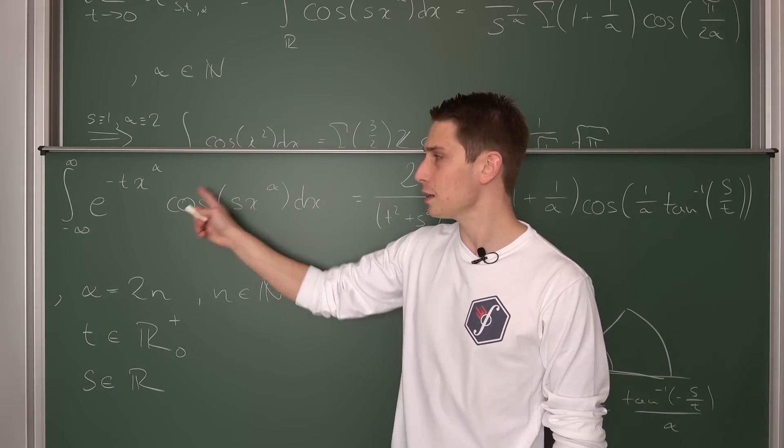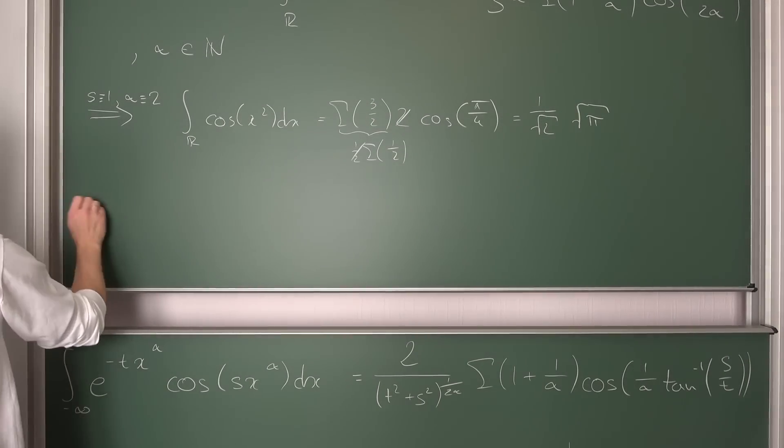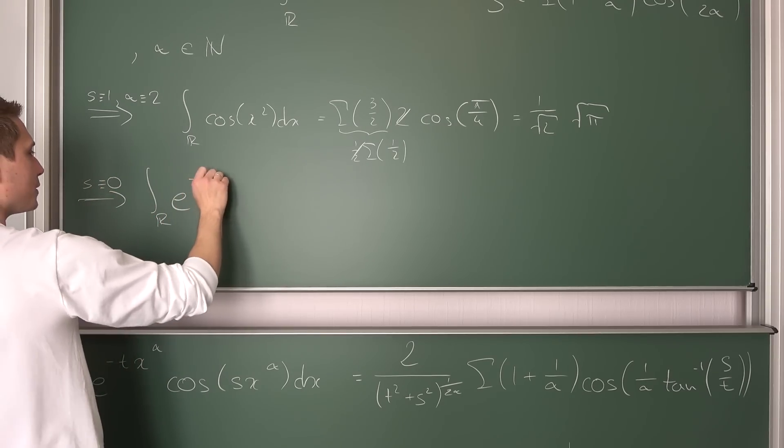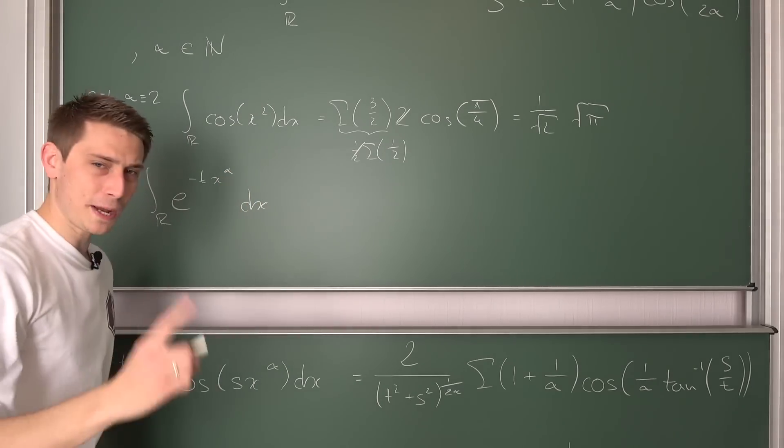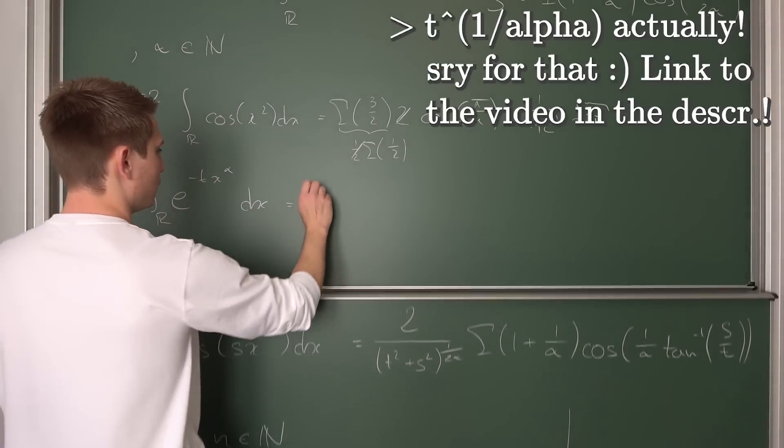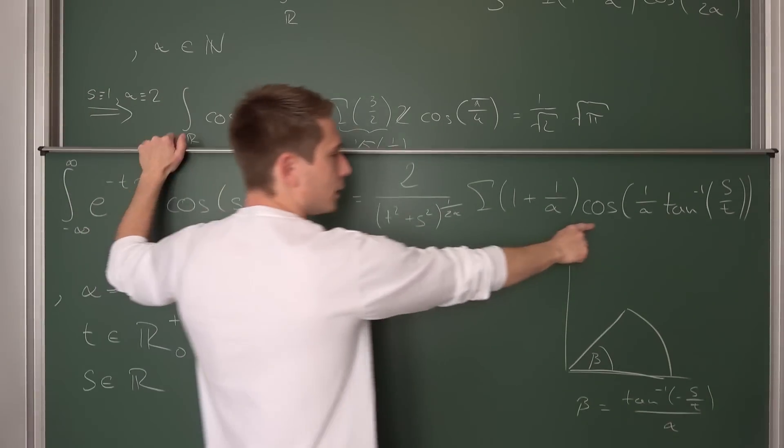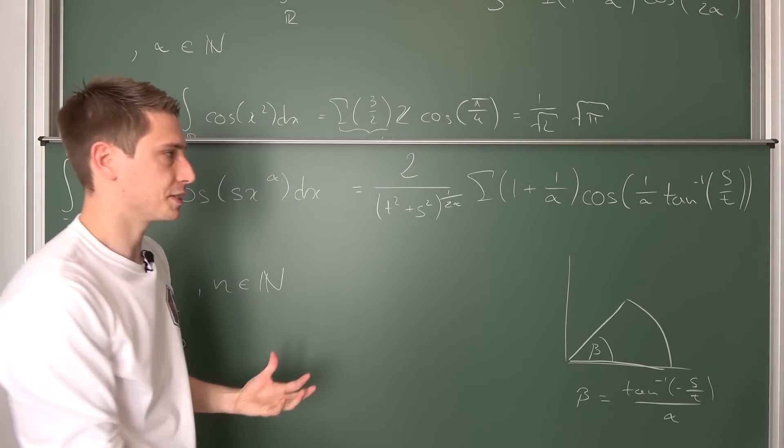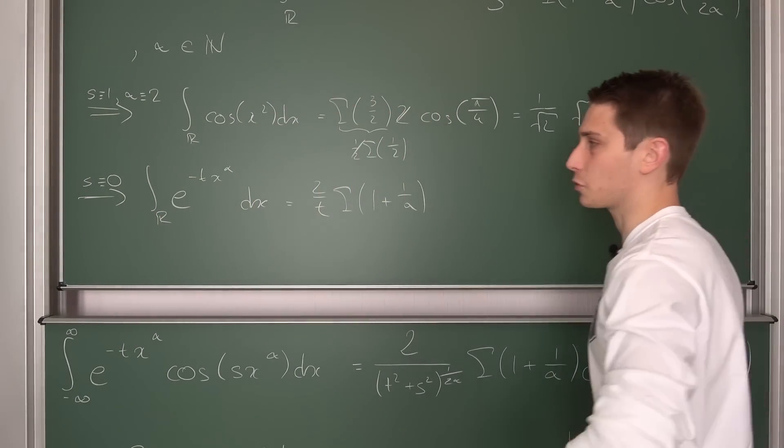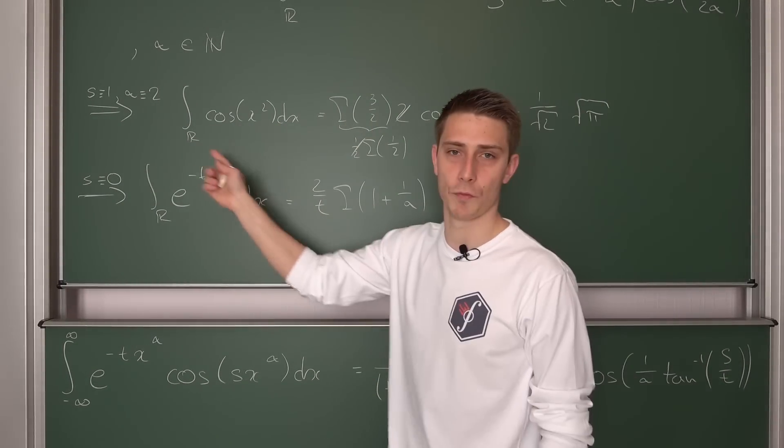Now, this is one really interesting special case, but we also have another special case, and this one being when s is equal to zero. When s goes to zero, well, our cosine goes to one and we are going to be left with something really interesting that I have derived before on this channel. So for s being equal to zero, we are going to have the integral over the whole of R of e to negative tx^α integrated with respect to x. If s goes to zero, same arguments as before, we are going to get 2 over t to the 1/α, Gamma of 1 plus 1 over α. And then inverse tangent of zero is going to be zero, so this whole thing is going to be one, meaning overall what we have here is the solution to the generalized Gaussian integral.